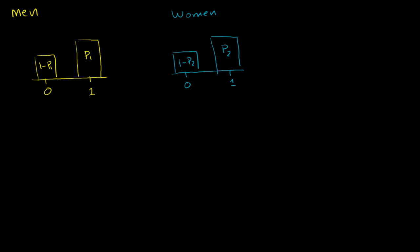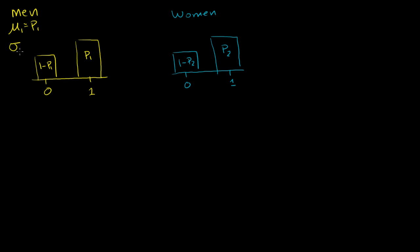And we know — just because this will be useful later on — that the means of these distributions are the same as the proportion that will vote. So the mean of the men, or the proportion of men that will vote, we'll call that mean 1, is equal to P1. And the variance of this first distribution — variance 1 — is just these two proportions multiplied by each other: P1 times 1 minus P1. We saw this many videos ago when we learned about Bernoulli distributions.